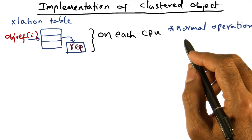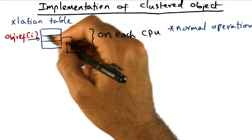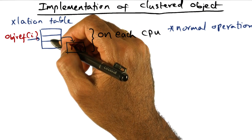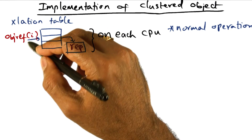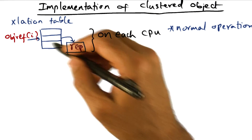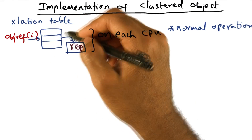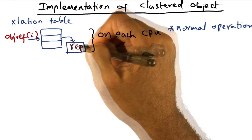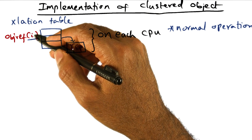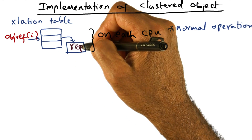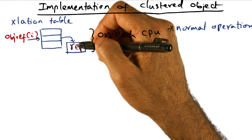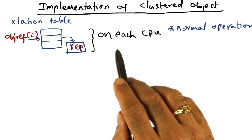Let's now talk about the implementation of clustered objects. Given an object reference, there is a data structure in the operating system called the translation table. The translation table maps an object reference to a representation in memory. So when you have an object reference presented to the operating system, that can be pointed to the particular representation. Remember that the reference itself is common — the same object reference may be pointing to this replica on a particular processor, a different replica on a different processor, and so on. That's the function of the translation table.